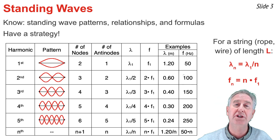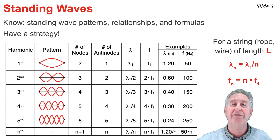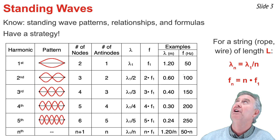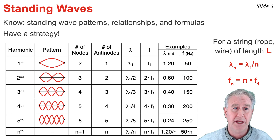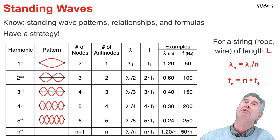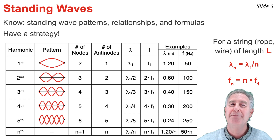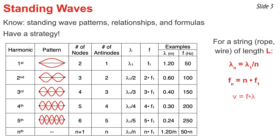The formulas you'll need are: the wavelength of the nth harmonic equals the wavelength of the first divided by n; the frequency of the nth harmonic equals the frequency of the first harmonic multiplied by n; the speed equals frequency times wavelength for any standing wave; and the wavelength equals two divided by the harmonic number, multiplied by the length of the rope, string, or wire.